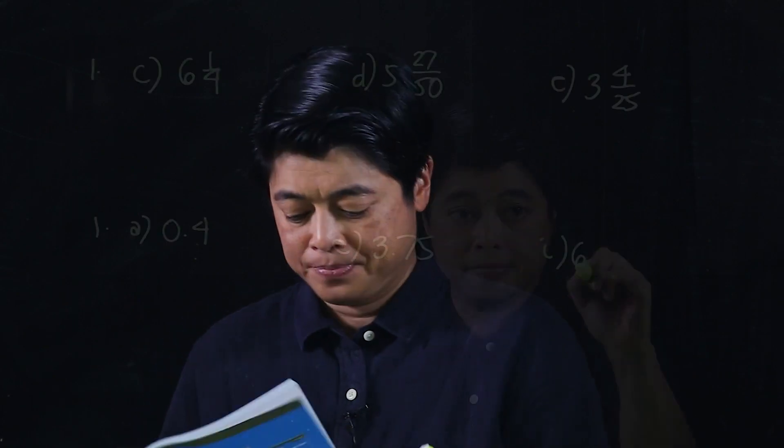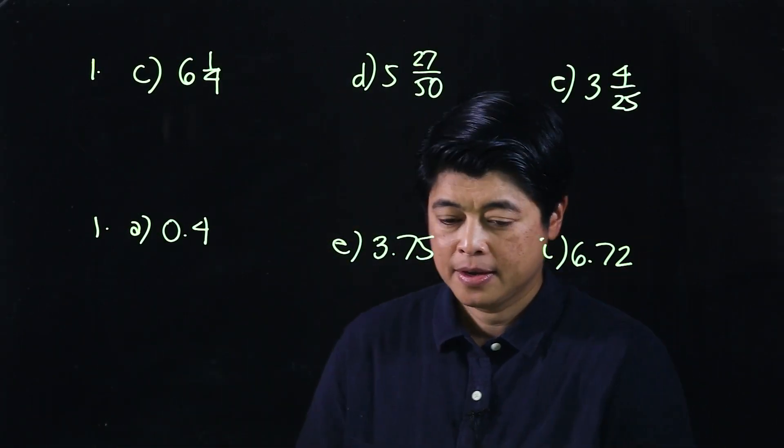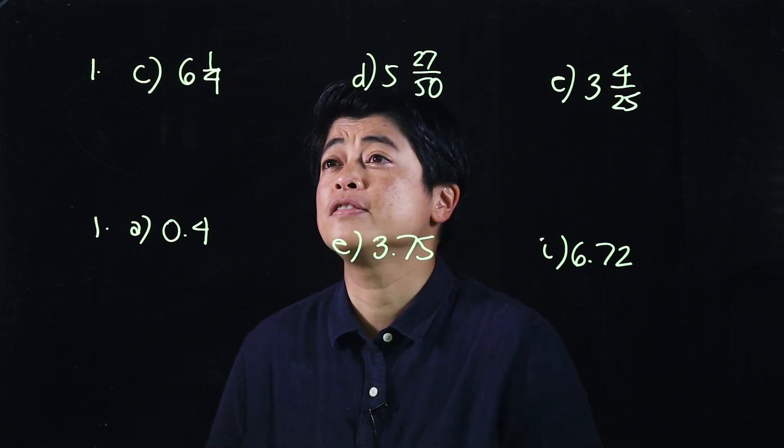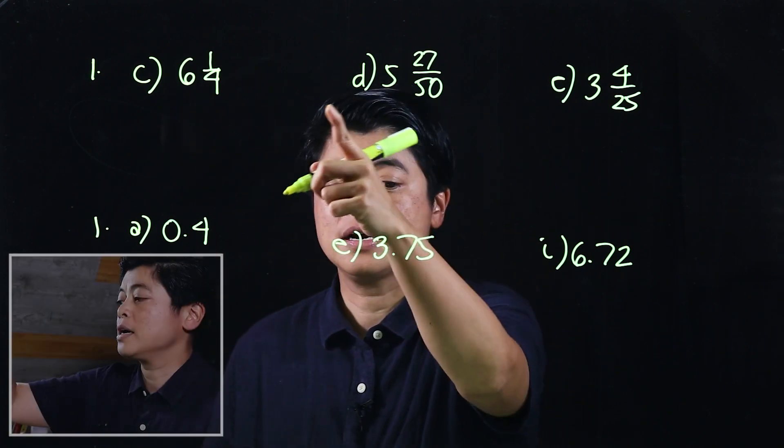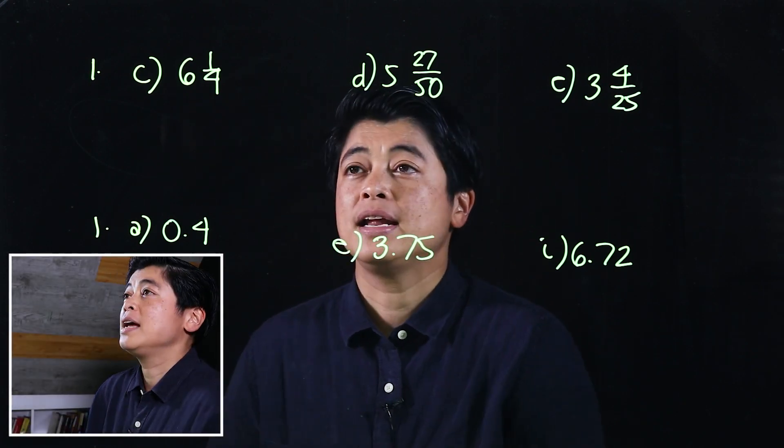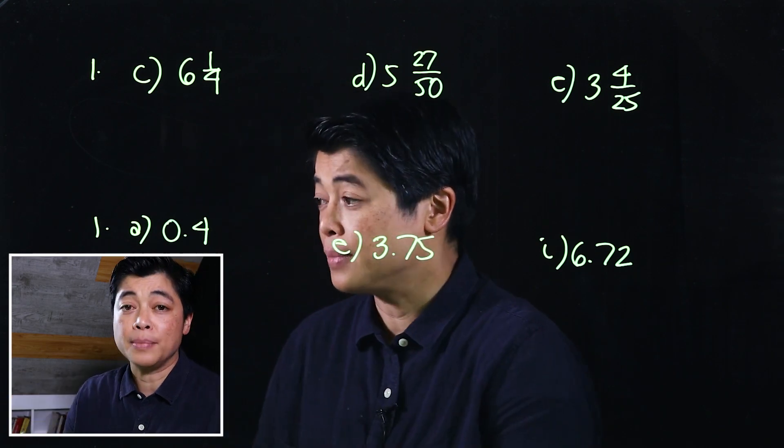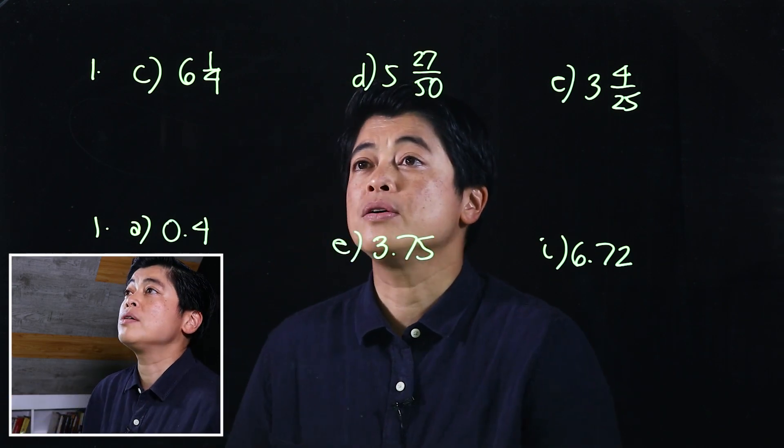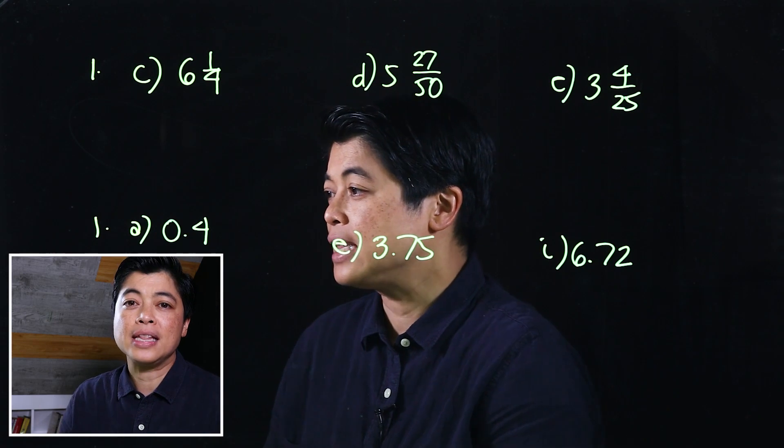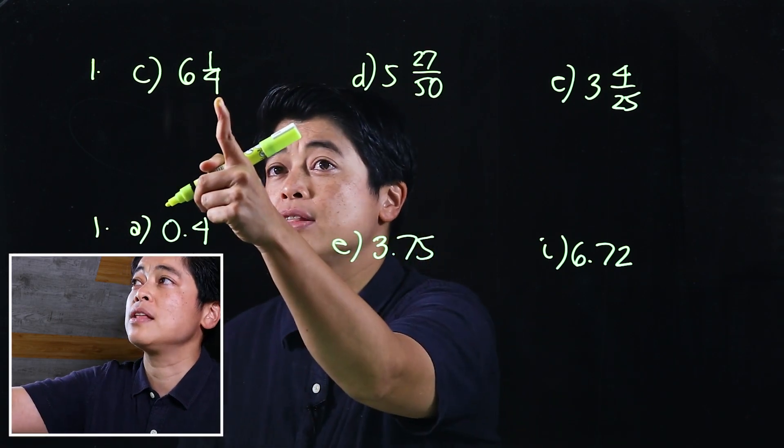The first one says express each fraction as a decimal. The first set of questions come from page 83, and it says to write as a decimal. So I said a while ago that if it's a fraction, ideally what we want to do is make this either over 10, over 100, or over 1000.